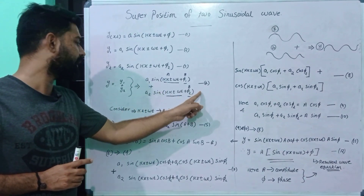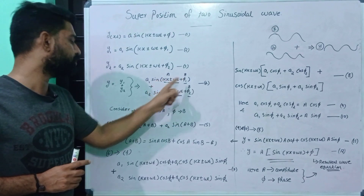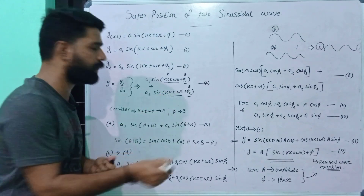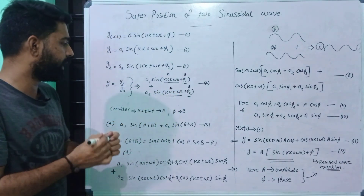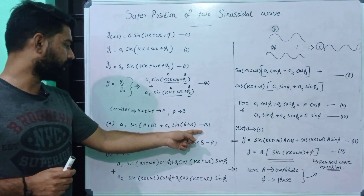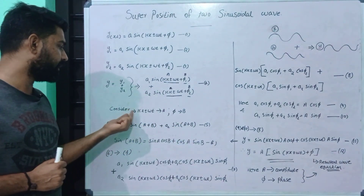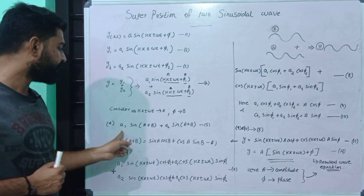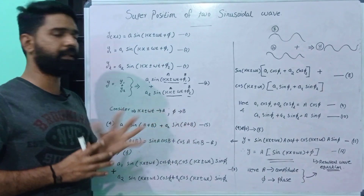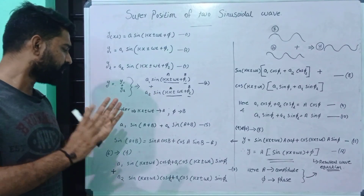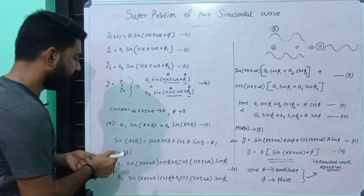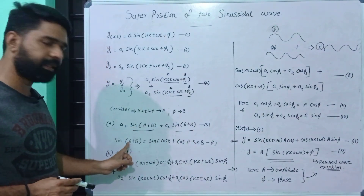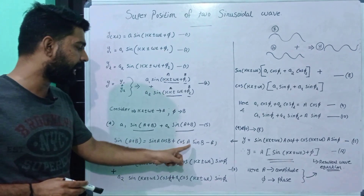Let's use this equation. If we have A1 sin(a + b) plus A2 sin(a + b), where a equals kx ± ωt and b equals φ, we will apply the trigonometric identity: sin(a + b) is equal to sin a cos b plus cos a sin b.